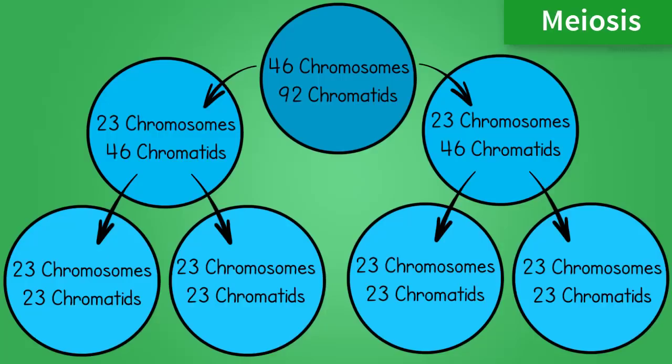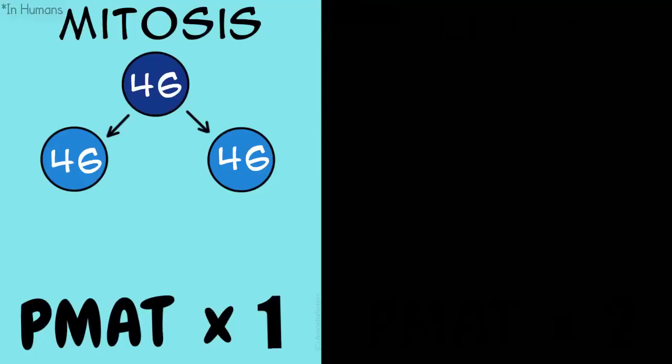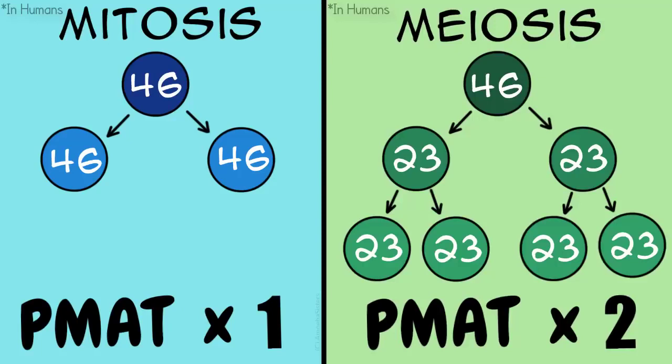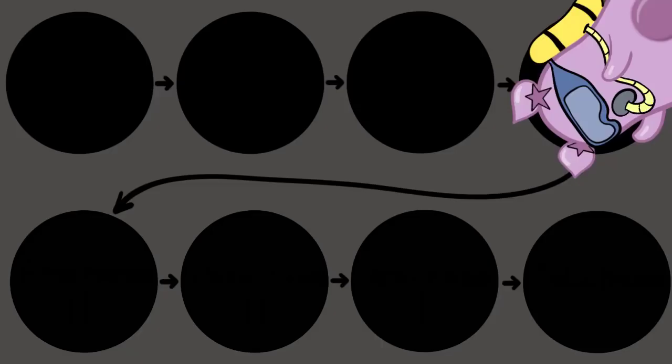But because meiosis is actually a reduction division, you're going from 46 chromosomes to 23, which means you actually divide twice. So instead of mitosis where you divide one time and do PMAT one time, in meiosis you're going to divide twice and therefore do PMAT twice. Because of this, in meiosis, you put numbers after the phases to indicate whether you're in the first division or the second division. So let's dive right in.